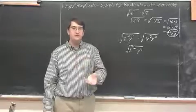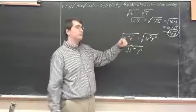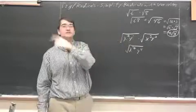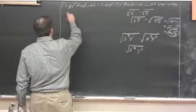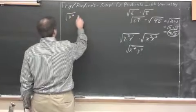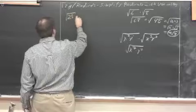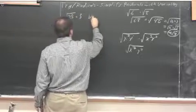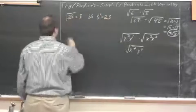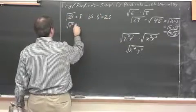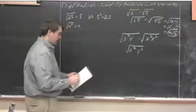Perfect square numbers — you know what they are: 1, 4, 9, 16, 25, 36, 49, and so on. It's important to remember that the reason the square root of 25 is equal to 5 is because 5 squared equals 25. In other words, the square root of x squared is equal to x, because x squared is equal to x squared.